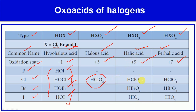The halic acids are: chloric acid (HClO3), bromic acid (HBrO3), and iodic acid (HIO3). In these halic acids — chloric, bromic, and iodic — the oxidation state of the halogen (chlorine, bromine, iodine) is +5.